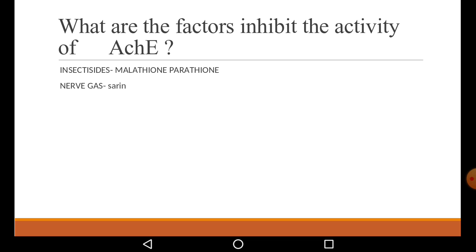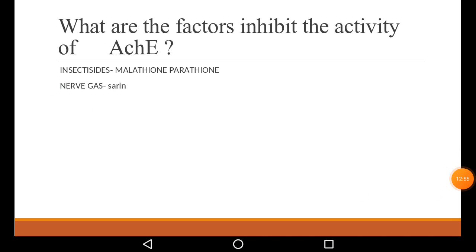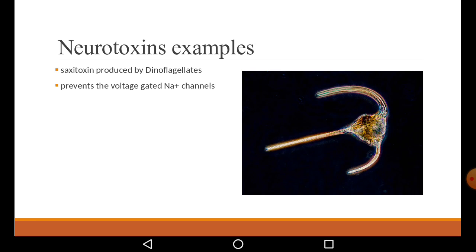What are the factors that inhibit the activity of acetylcholinesterase? Insecticides like malathion and parathion, as well as the nerve gas called sarin, inhibit acetylcholinesterase activity. Examples of neurotoxins: tetrodotoxin, which is secreted by puffer fish — if it enters our body, it blocks sodium channels. Dinoflagellates secrete saxitoxin, which prevents voltage-gated sodium channels.